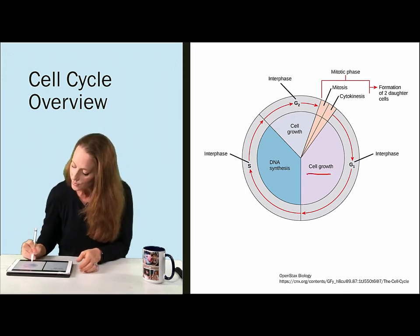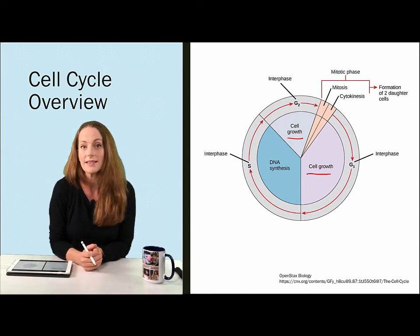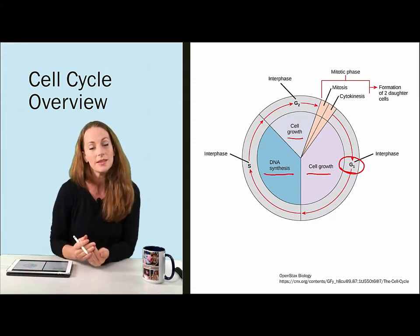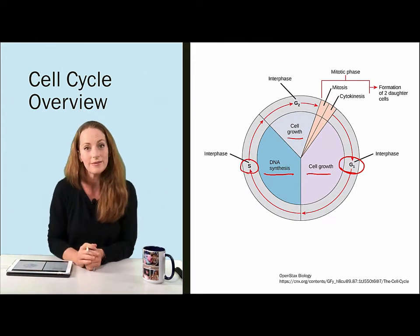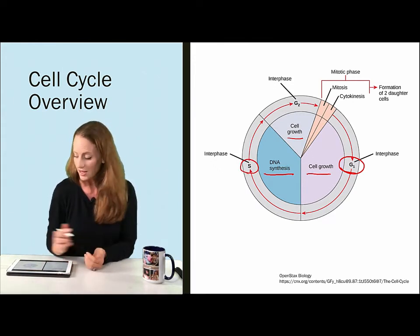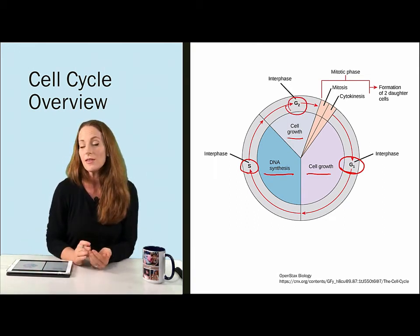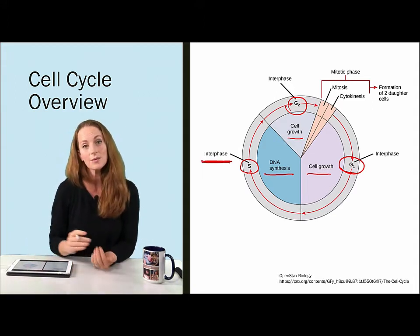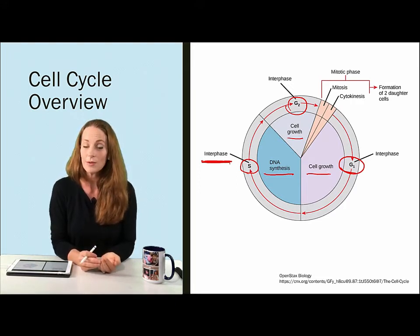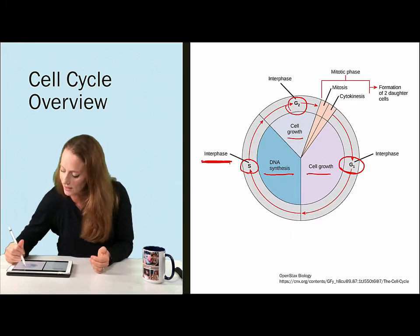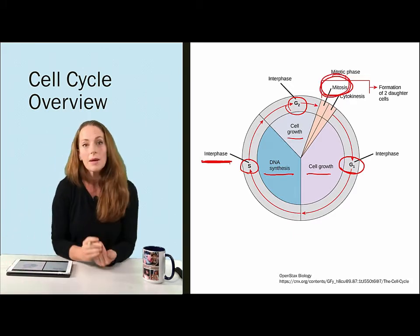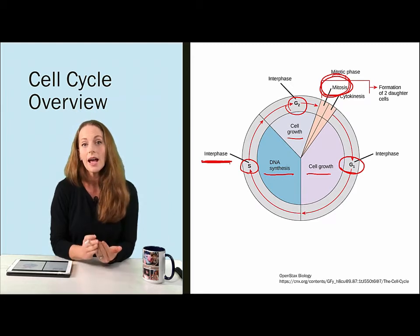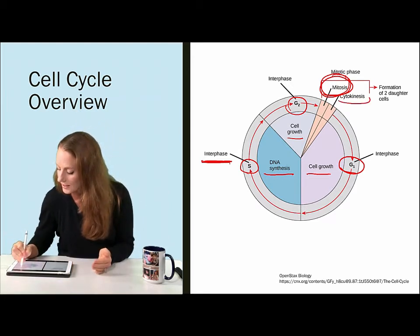We have various growth phases, which are gap phases in the cell cycle. We have a gap one or G1. Then we have a synthesis phase where the DNA is replicated, referred to as the S phase. Then we have another gap phase, G2. G1, S, and G2 together are known as interphase — the phases in between mitosis. Then we have mitosis, which will encompass those four phases: prophase, metaphase, anaphase, and telophase, and then finish up dividing the cell through cytokinesis.